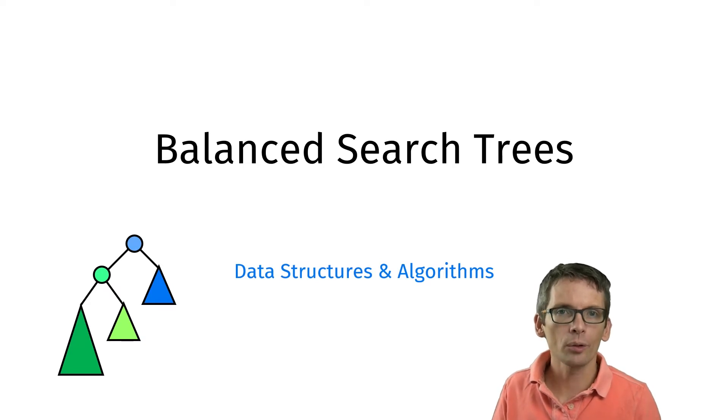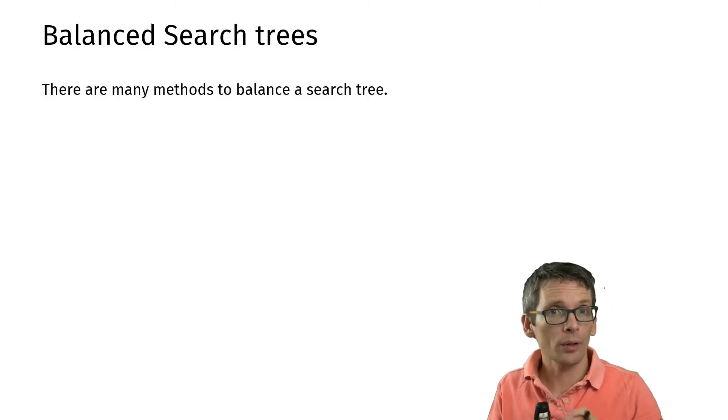I'd like to give you a short overview of how to balance a binary search tree. I'm not going to show any of the methods in detail, I'm just giving a general overview.